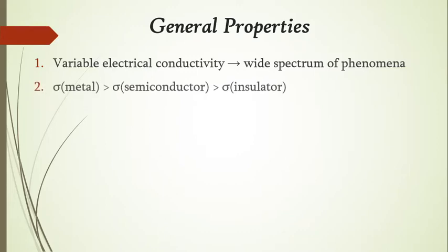The next property can be taken from the definition itself: the electrical conductivity of semiconductors lies intermediate between that of a metal and an insulator. The electrical conductivity of a metal is the highest, that of an insulator is the least, and semiconductors have an electrical conductivity in between these two.